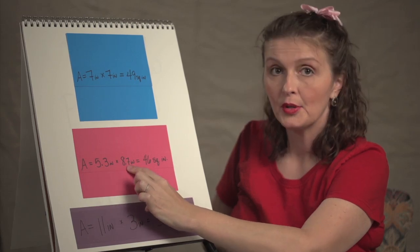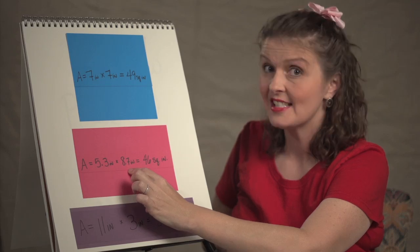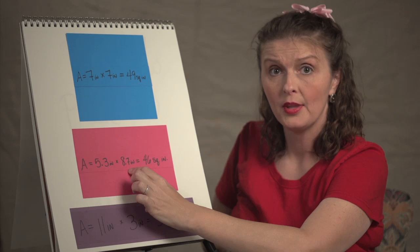And still, my perimeter is 28, because 5.3 plus 8.7 is that 14 magic number that we looked at.